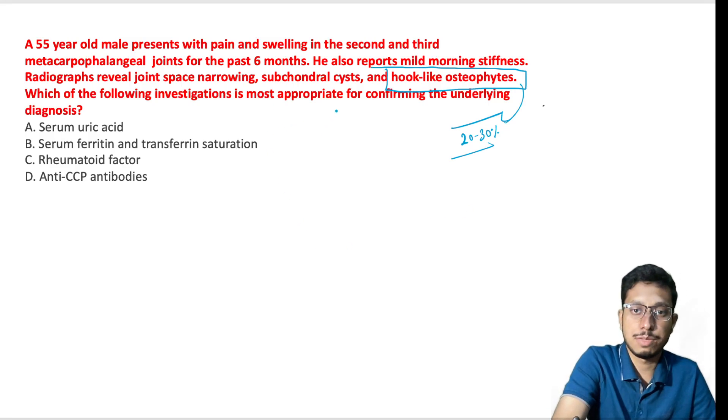The question asks which investigation is most appropriate for confirming the underlying diagnosis. Arthropathy is very common in hemochromatosis — seen in around 30 to 40 percent of cases — with osteoarthritis-like changes, and usual presentation is around age 40 and above. In some cases, arthropathy starts even before cirrhosis or pancreatic disturbances set in. So a middle-aged man with MCP joint arthritis should prompt evaluation of iron studies to check for hemochromatosis.